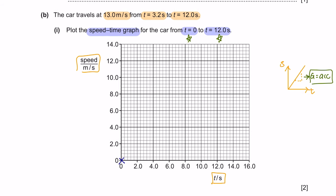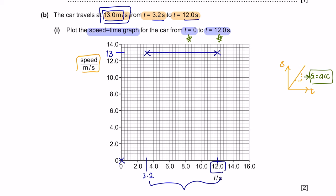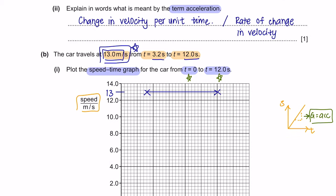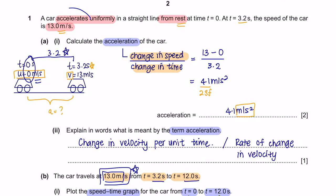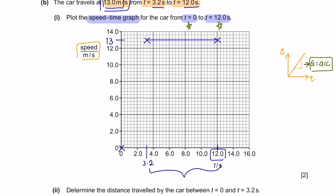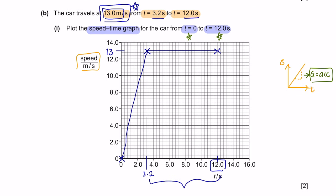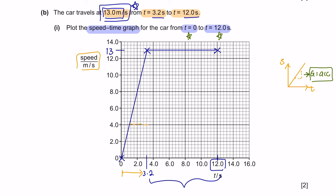The car travels at 13 meters per second from 3.2 seconds to 12 seconds, so from here to here it travels at a constant speed of 13 meters per second. The reason it's constant is because only one value is given. So from that point, you draw a horizontal line representing 13 meters per second. From t=0 to 3.2 seconds, the car accelerates uniformly, meaning you can draw a straight line.